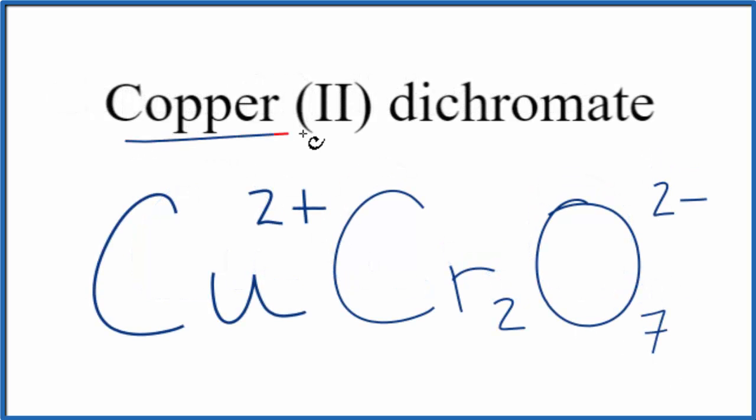So because copper is a metal and dichromate, that's a polyatomic ion, we have an ionic compound. And the charge, that all has to add up to zero, because copper 2 dichromate, it's a neutral compound. It doesn't say ion after the name here.